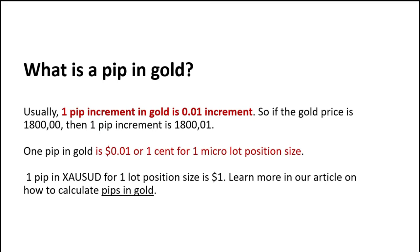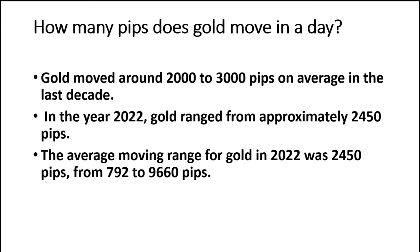One pip in gold is one cent for one micro lot position size. If you want to learn more about position sizing for gold, there's a link to our previous video on that topic. Today we'll talk about gold volatility and something that's very, very important for every single trader that trades gold.